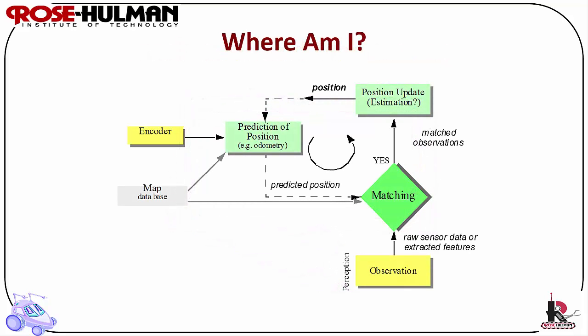One way for a robot to determine where it is is to use odometry or path integration. Because of accumulation error, the robot will eventually need to recognize a landmark to reset the odometer. This is localization relative to the start or reference point — for example, a GPS map. Localization is also treated as a state estimation problem. State estimation is the process of estimating the state of a system from measurements. On the diagram, you have encoders which are used to predict the position of the robot, and then you match that position to something in the world to update the estimation. You do that by having some kind of observation, such as a landmark.